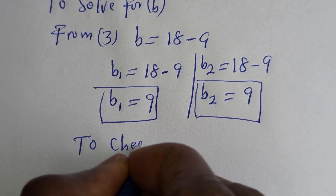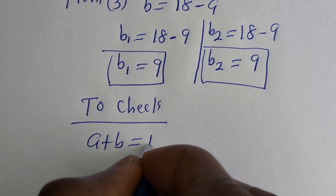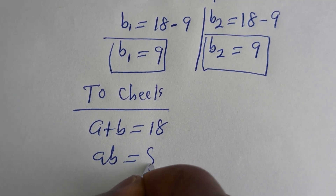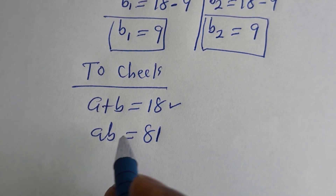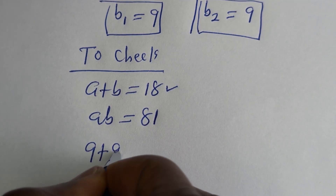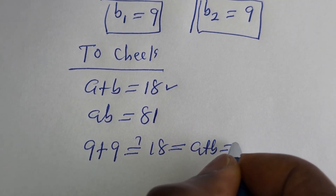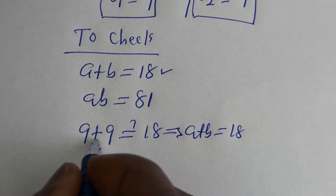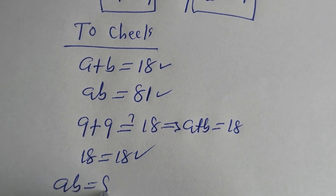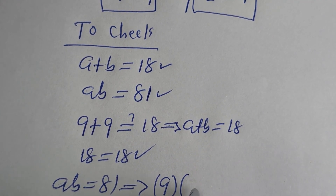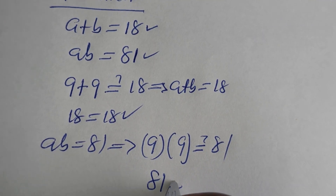Let's check to confirm if this answer is correct. We have the given equations: A plus B equals 18 and AB equals 81. When A equals 9 and B equals 9: 9 plus 9 equals 18, which is true. And 9 multiplied by 9 equals 81, which is also true. Both conditions are satisfied.